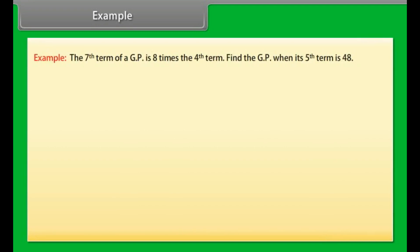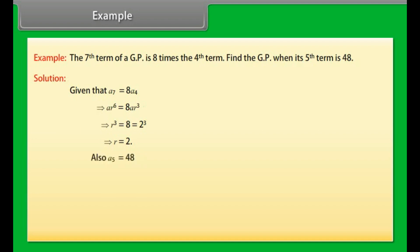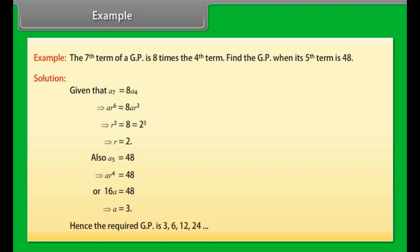Example: The 7th term of a GP is 8 times the 4th term. Find the GP when its 5th term is 48. Solution: A7 = 8 × A4, so AR⁶ = 8 × AR³, giving R³ = 8 = 2³, thus R = 2. Also A5 = 48, so AR⁴ = 48, meaning 16A = 48, thus A = 3. Hence the required GP is 3, 6, 12, 24, and so on.